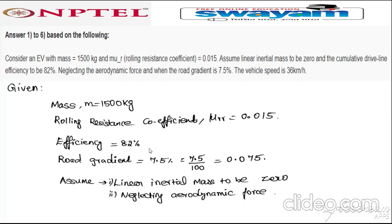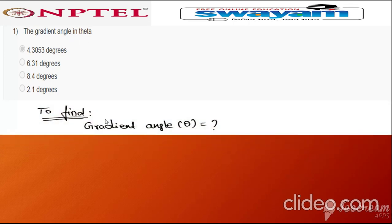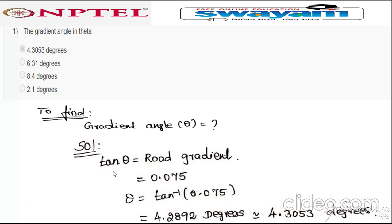Question number one: find the gradient angle theta. The formula is tan(θ) = road gradient = 0.075. From this, θ = tan⁻¹(0.075) = 4.2892 degrees approximately. The corresponding correct option is option one: 4.3053 degrees.